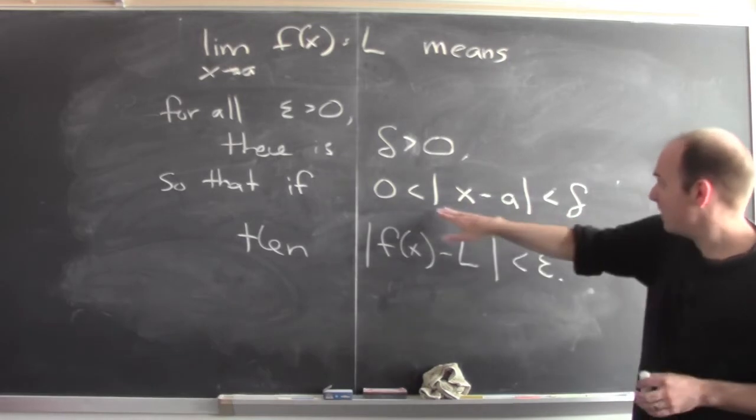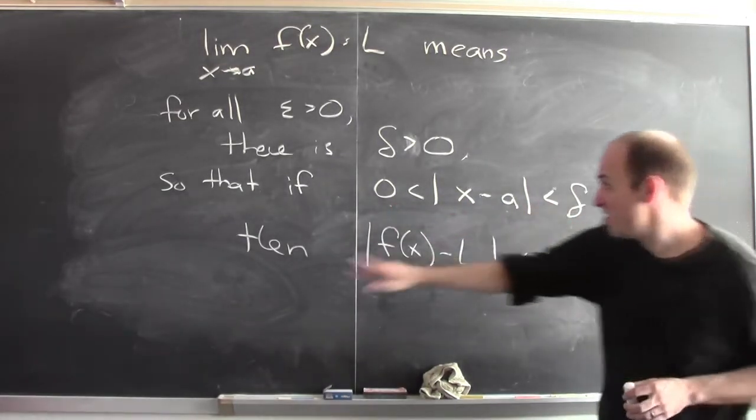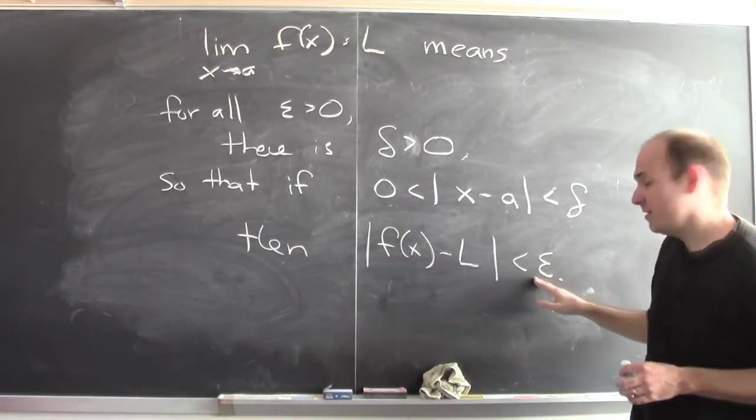So that if the absolute value of x minus a is between 0 and delta, then the absolute value of f(x) minus L is less than epsilon.